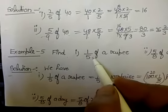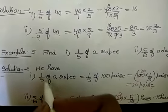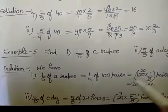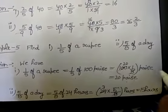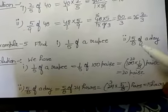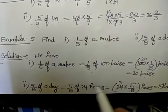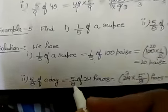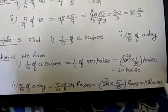Next example: find 1 upon 5 of a rupee. Since a rupee contains 100 paise, we write 1/5 of a rupee as 1/5 of 100 paise, which equals 100 multiplied by 1 upon 5 paise. Since 5 divides 100 twenty times, the answer is 20 paise. Similarly, 5 upon 8 of a day can be written as 5/8 of 24 hours, since a day contains 24 hours. So it becomes 24 multiplied by 5 upon 8. Since 8 divides 24 three times, we get 3 into 5 equals 15 hours.